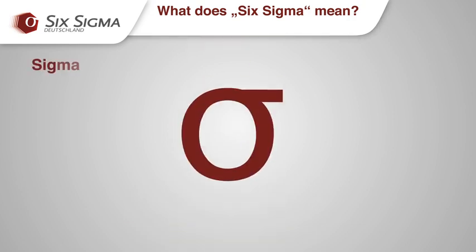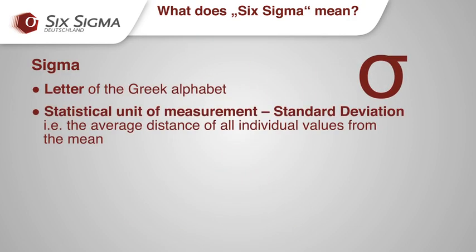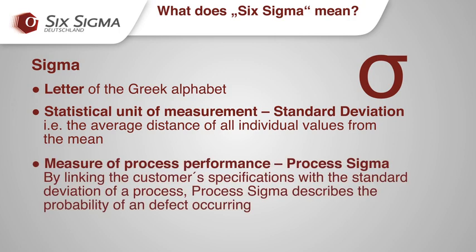What then is Six Sigma? The term Six Sigma: in mathematics, the Greek letter Sigma is a statistical measurement which indicates the average difference or distance of individual values from the mean average of a data set, i.e. the standard deviation. In the Six Sigma method, this value is meaningful as a measurement of process variation and performance. When used in connection with customer expectations, this measurement indicates the defect rate of a process.